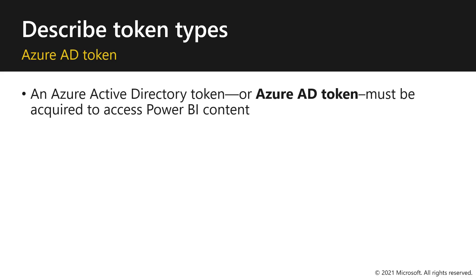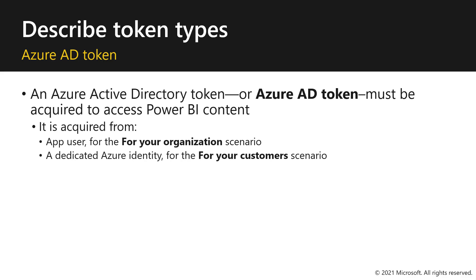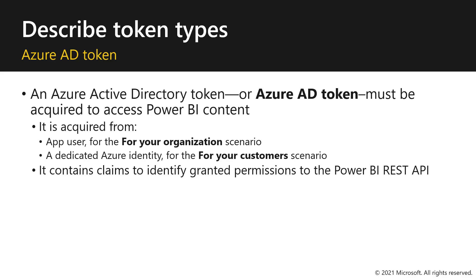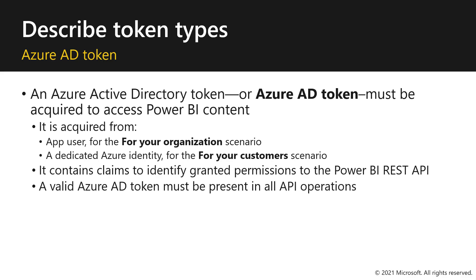The Azure Active Directory token, also known as an Azure AD token, must be acquired to access Power BI content. It will be acquired differently depending on your embedding scenario: from an app user when embedding for your organization, or using a dedicated Azure identity when embedding for your customers. The Azure AD token contains claims to identify granted permissions to the Power BI REST API and to control which content will be presented. A valid Azure AD token must be present in all API operations — consider this as your key for embedding.